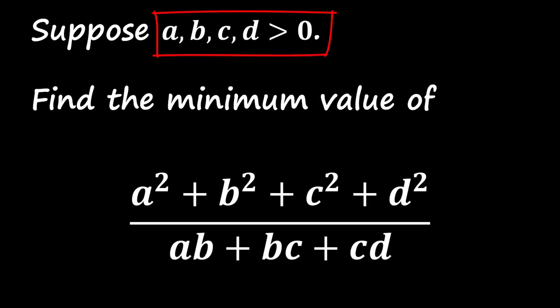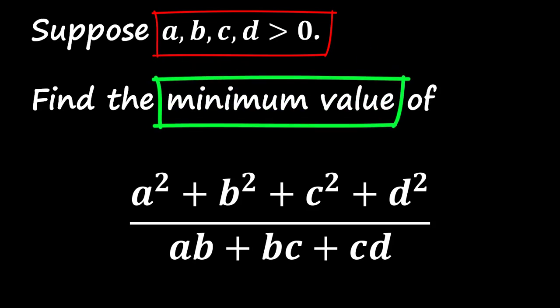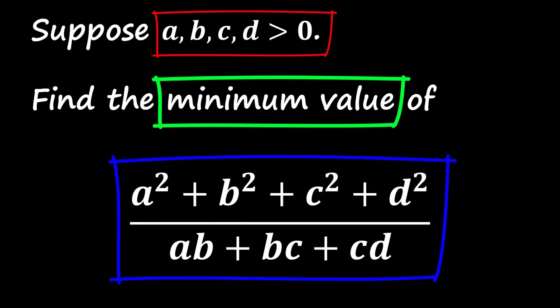Suppose that a, b, c, and d are all positive. In this video, we're going to find the minimum value of the expression: a squared plus b squared plus c squared plus d squared, divided by ab plus bc plus cd. Let's dive into the solution.